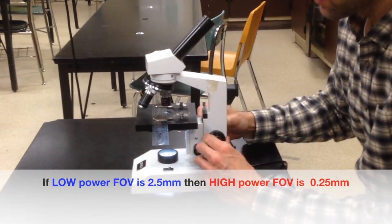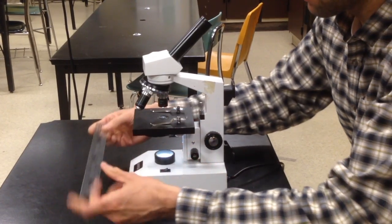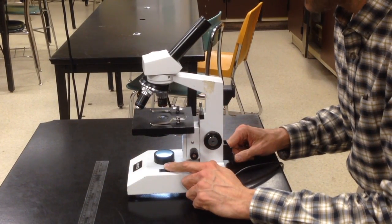That's about it. When you're done, make sure you move the stage down, slide your ruler out under low power, and then you can turn it off and clean up.